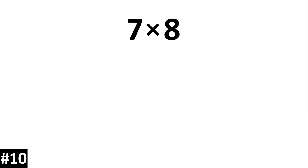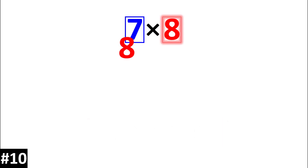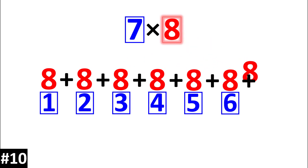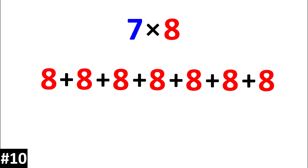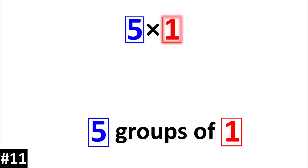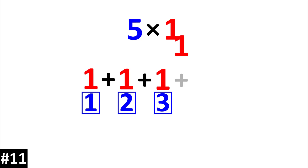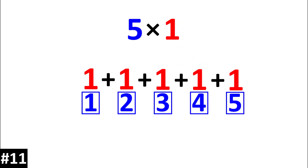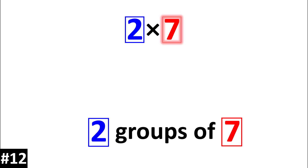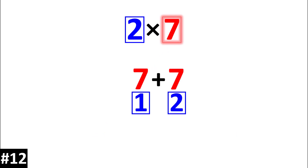Seven times eight is the same thing as seven groups of eight. Two times seven is the same thing as two groups of seven.